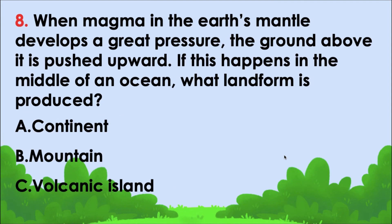When magma in the Earth's mantle develops great pressure, the ground above it is pushed upward. If this happens in the middle of an ocean, what landform is produced? The correct answer is letter C — volcanic island.